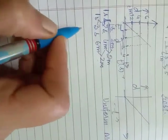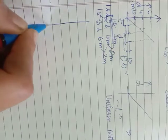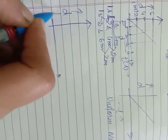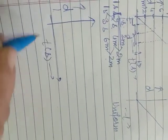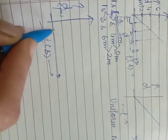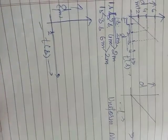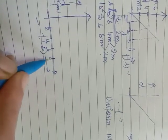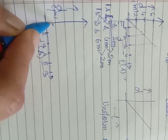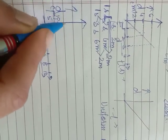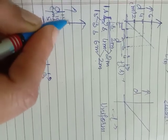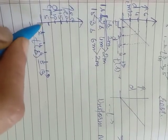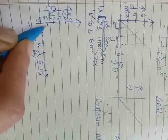This is a continuation from the previous video. I'm taking one more example of a distance-time graph showing non-uniform motion. This is the distance axis and this is the time axis — distance in meters and time in seconds. On the time axis we have 2, 4, 6, 8, 10 seconds, and on the distance axis we have 5, 10, 15, 20, 25 meters. Suppose we are getting a curved graph like this.